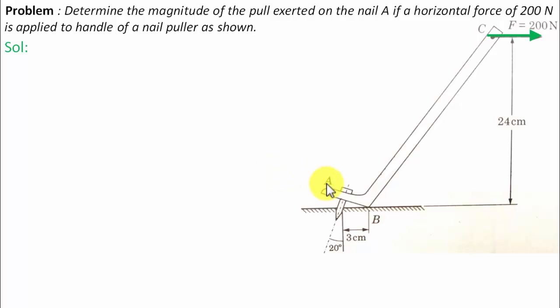Let us try to understand this entire arrangement. We have a nail over here which is supposed to be pulled with the help of this nail puller. At point C of this nail puller, a force of 200 Newton magnitude has been applied in the right hand side direction.